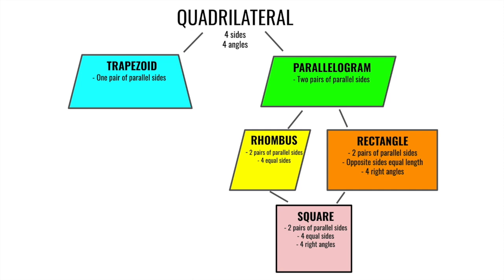The first type we will talk about is a trapezoid. If there is one pair of parallel sides — meaning two sides that run in the same direction without ever touching — we call it a trapezoid. The other sides, if extended, will eventually touch, so they are not parallel. One pair of parallel sides means it is a trapezoid.